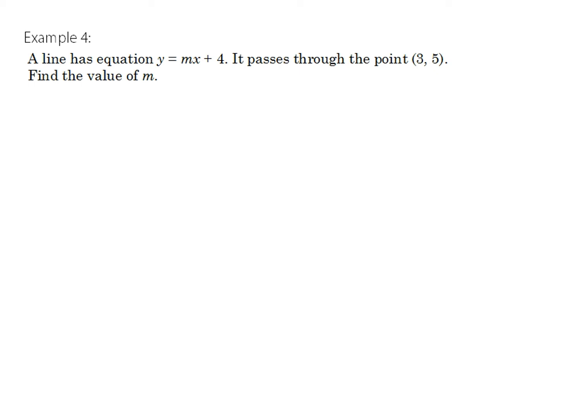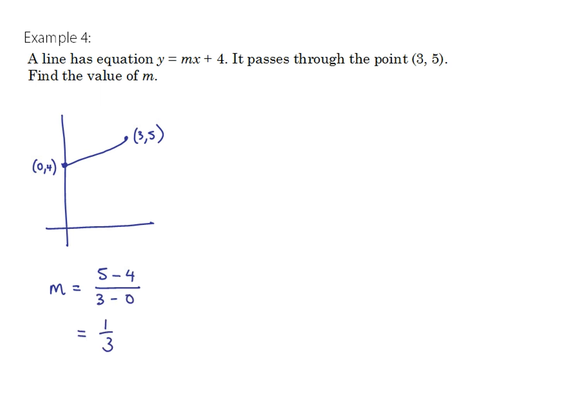Here we have a line with equation y equals mx plus 4 — the gradient is unknown and the y-intercept is 4. It passes through the point (3, 5) and we need to find m. One approach is to visualise or sketch the diagram and calculate the gradient of the line joining (0, 4) and (3, 5): rise over run equals 1/3, so m equals one third.